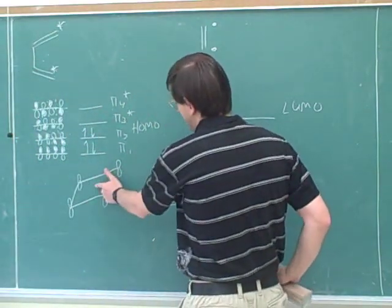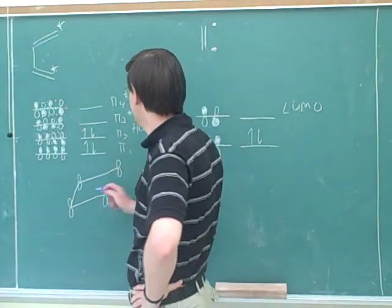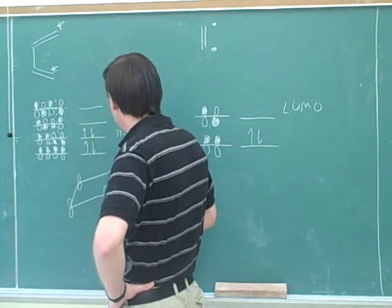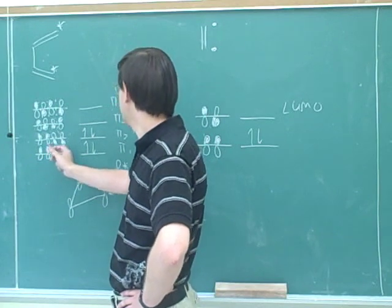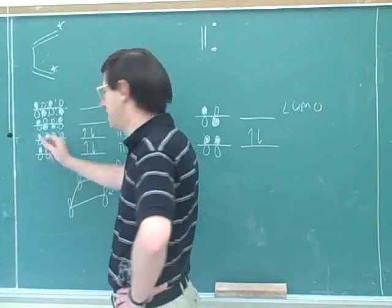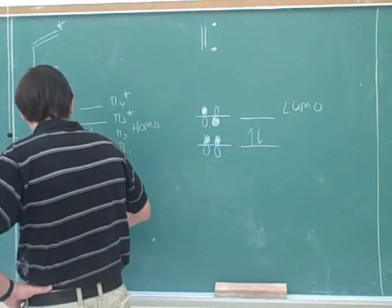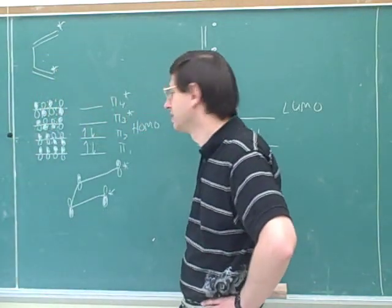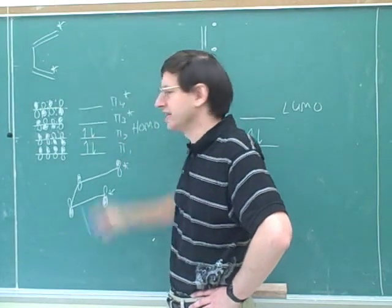This was supposed to represent the diene, so which of these four pictures should I use? Since this represents the diene, we decided the diene was going to use its HOMO. So I'm going to put in these shadings: shaded on top, shaded on top, shaded on the bottom, shaded on the bottom. We just used the HOMO picture from the diene.